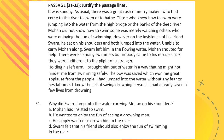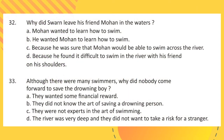Question 31: Read the passage and answer the questions below. Question 31: Why did Swarn jump into the water carrying Mohan on his shore? Question 32: Why did Swarn leave his friend Mohan in the waters? Question 33: Although there were many swimmers, why did nobody come forward to save the drowning boy?